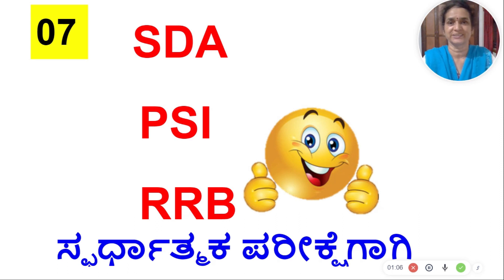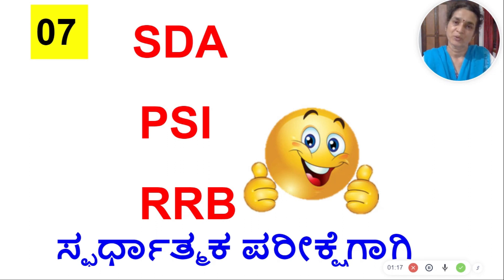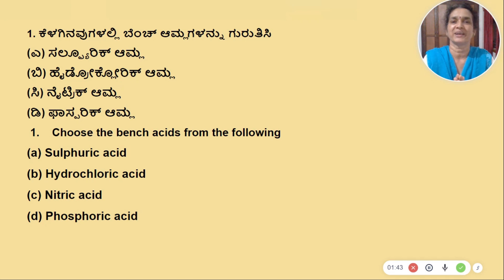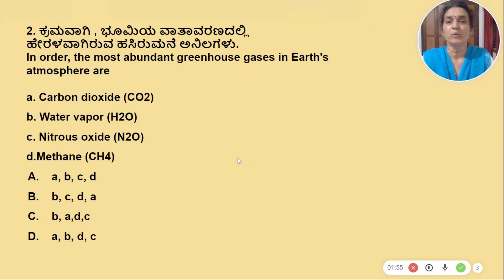It is important that you discuss all the questions. Let's start with bench acids: Sulphuric, Hydrochloric, Nitric and Phosphoric. Identify the bench acids from the following. We discussed bench acids in the last video. We have a set of chemicals in the next video. This is the best way we can find bench acids.